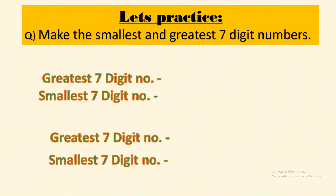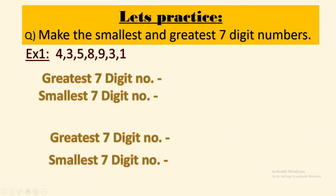Now let's practice. We have to make the smallest and the greatest seven digit number. We already know how to make it. To form the greatest number, we have to arrange the digits in descending order, and to form the smallest number, we have to arrange the digits in ascending order.